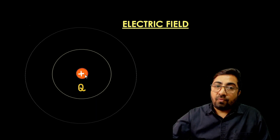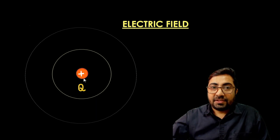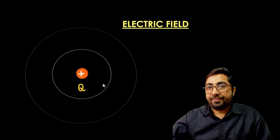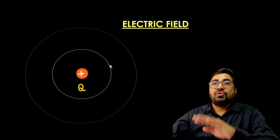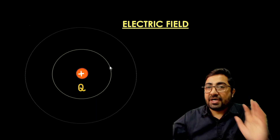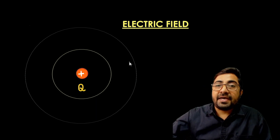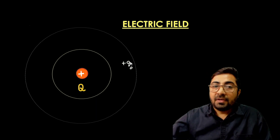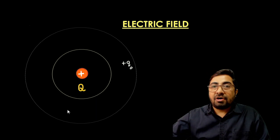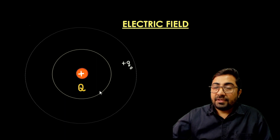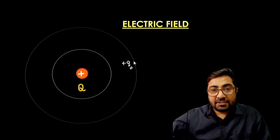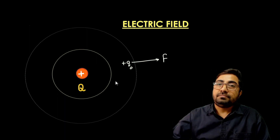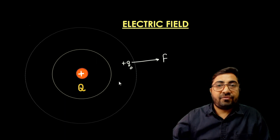Here one positive charge, let's say it is Q, is placed in the region. It has its own effect around this charge. If I place another charge, let's say Q0, which is a positive charge, in the region of Q, then Q applies a force on Q0. Obviously it is the force of repulsion.